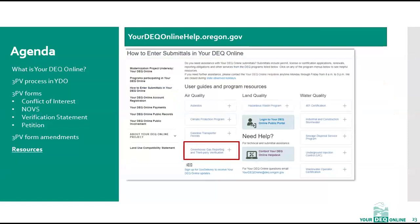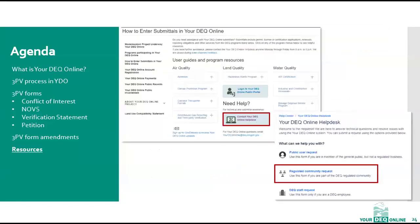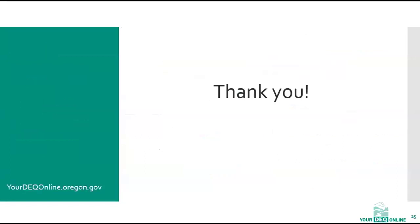Finally, let's cover where you can find resources to help with Your DEQ Online. YourDEQonlinehelp.oregon.gov is a great first stop. Click to expand the greenhouse gas reporting and third-party verification button to see all available resources, such as user guides, training videos, and more. If you need system support, you can get in touch with the Your DEQ Online help desk from the same page by clicking on Contact Your DEQ Online Help Desk. This will navigate you to the help desk web portal, where you can click Regulated Community Request to submit a ticket. This concludes today's presentation. Thank you for attending.